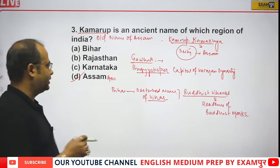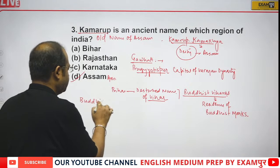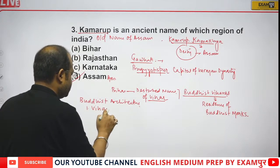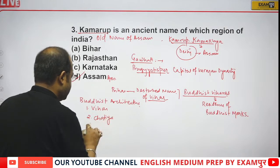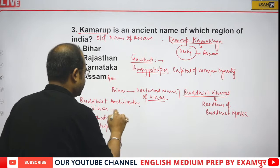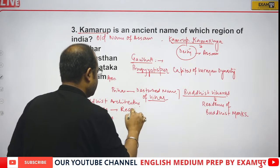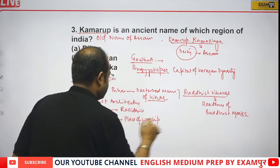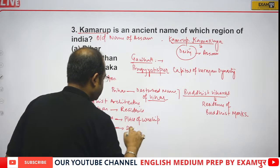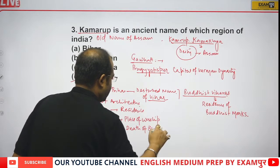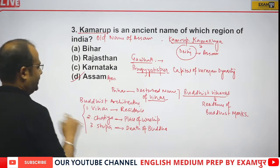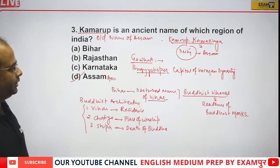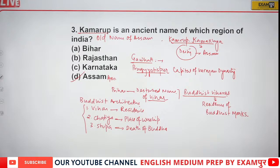In Buddhist architecture, the Vihar is the residence of Buddha. It is said that it was created on the relics of the Buddha. These three things — Stupa, Vihar, and Chaitya — are related to Buddhist architecture. Correct answer is option D.